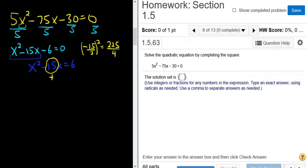So now we're going to add this to both sides of our equation. So you always take this number, divide it by 2, and square it, and add it to both sides. So we get x² - 15x + 225/4. Then here we get 6 + 225/4.